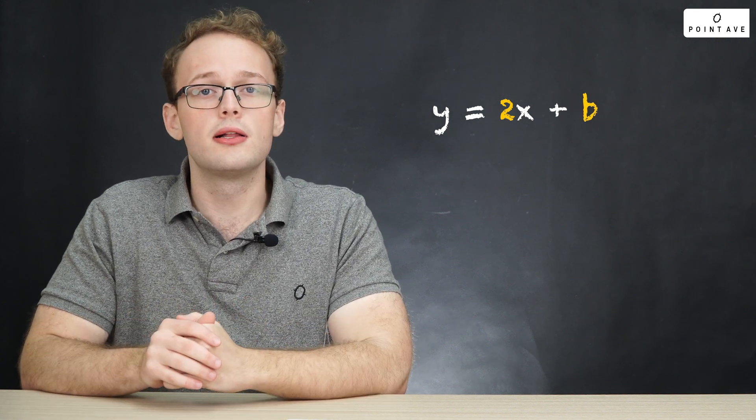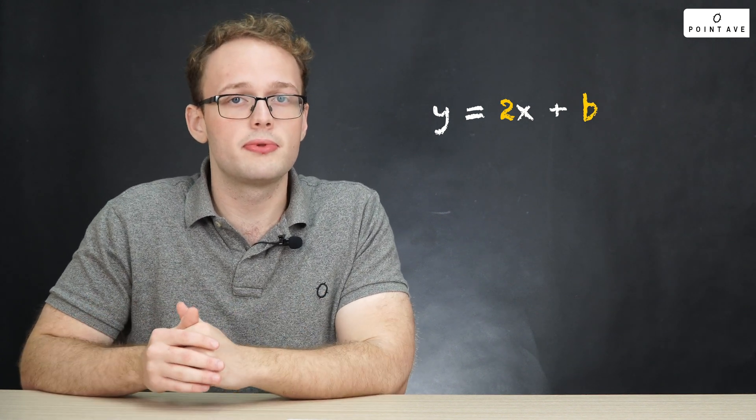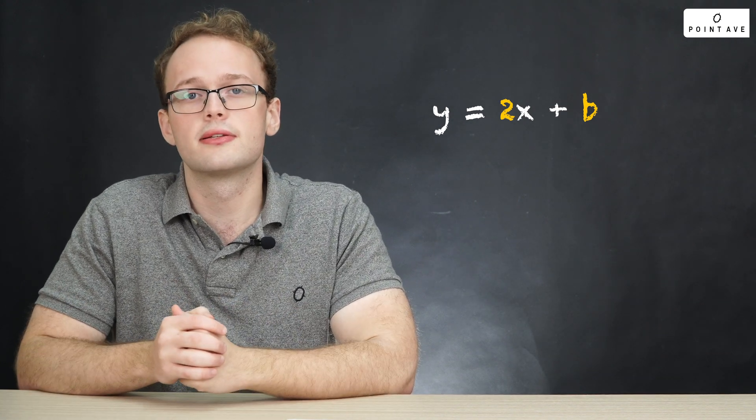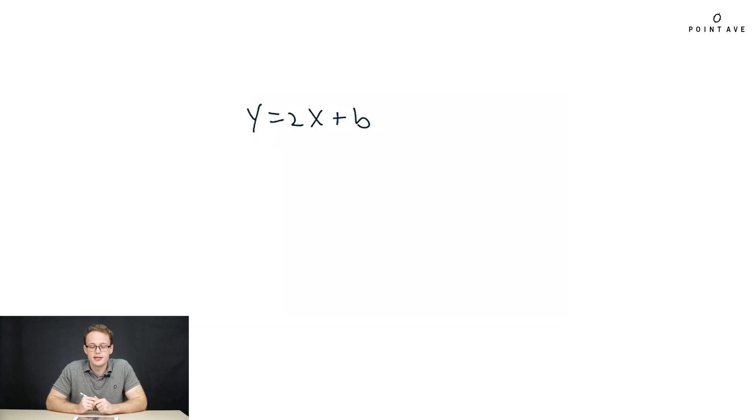So how can we find b? Well, we take one of our coordinate points, plug it into the equation as we have it so far, and we can simply solve for b. So let's pick our first coordinate point. Now we start with our equation here, y equals 2x plus b, and then we plug in x equals 1, y equals 61. So we get this equation here, which we can easily solve for b, and we find b equals 59.